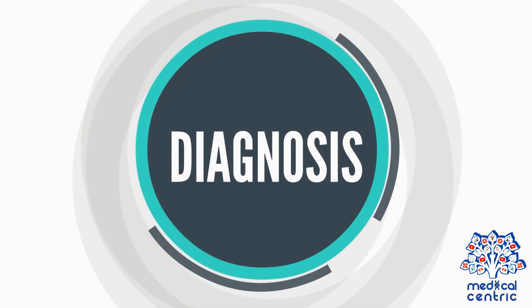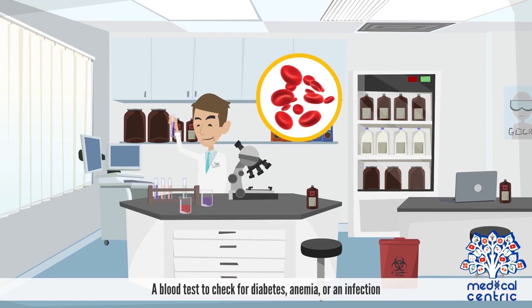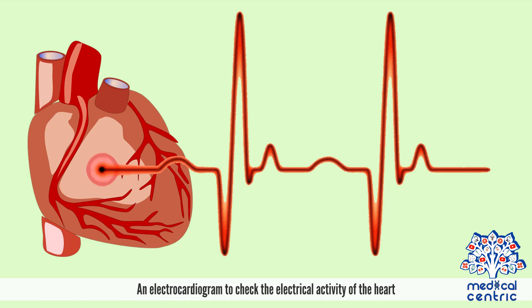Diagnosis and treatment: To make a diagnosis, the doctor will review your medical records and will ask about fainting episodes. The doctor may carry out certain tests, including a blood test to check for diabetes, anemia, or an infection, and an electrocardiogram to check the electrical activity of the heart.